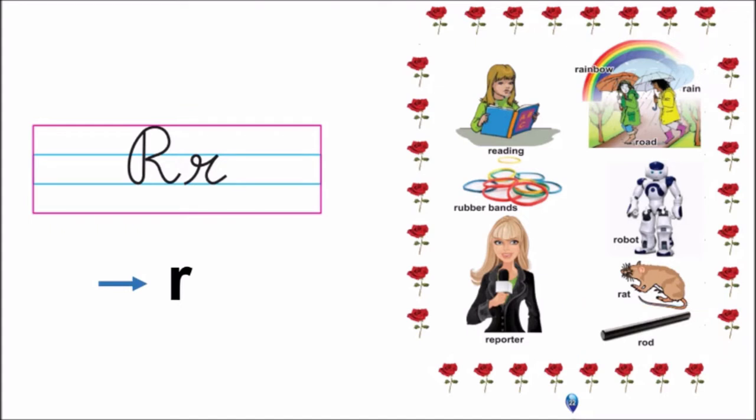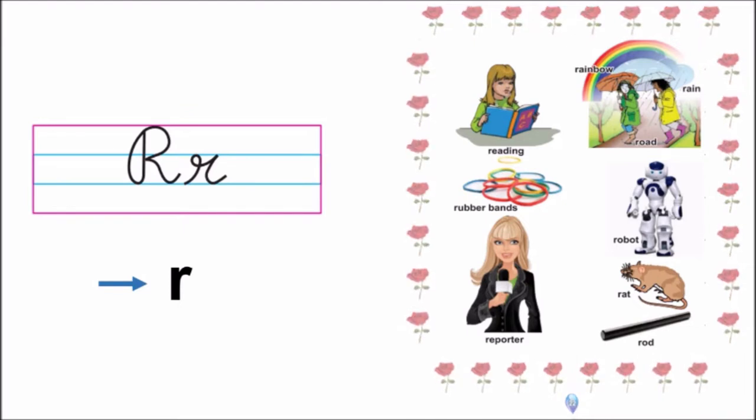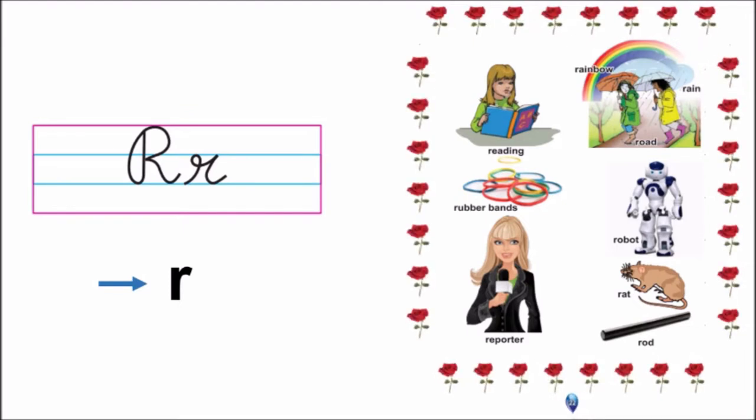Now children, look at the border. What do we have? Yes, R, R, rose. R, R, rose.